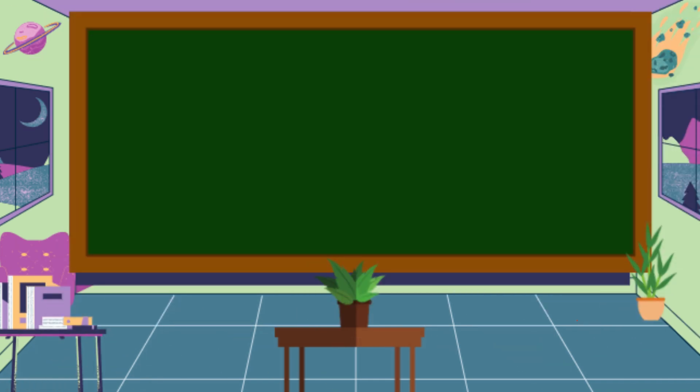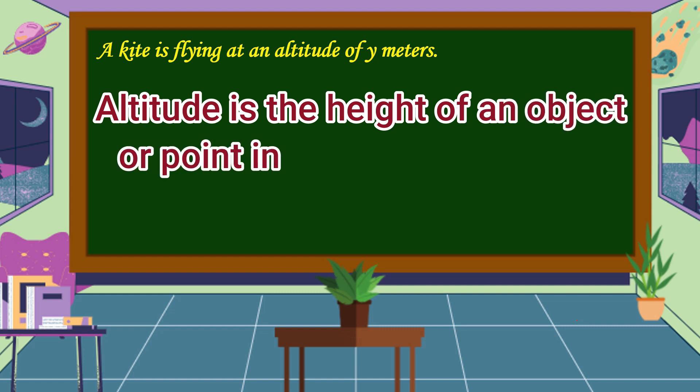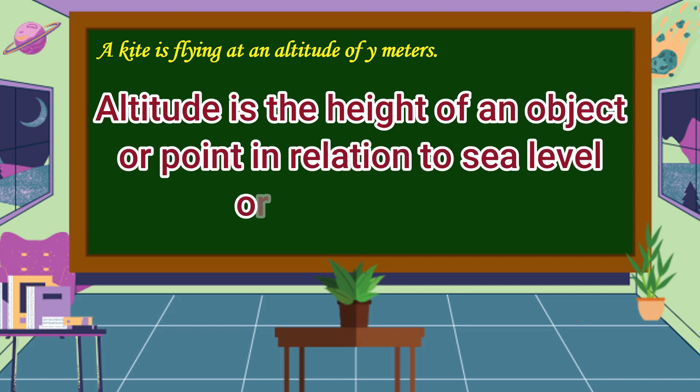To understand our topic for today, let's study the following examples. A kite is flying at an altitude of y meters. When we say altitude, it is the height of an object or point in relation to sea level or ground level.